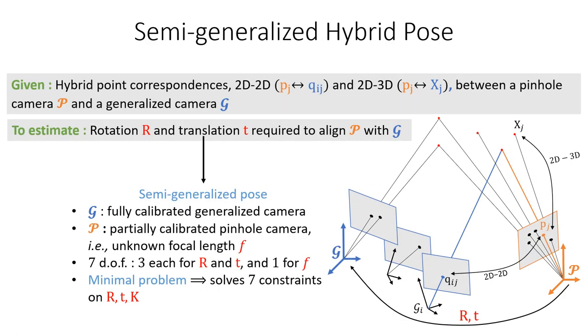Given a set of 2D-2D point correspondences and a set of 2D-3D point correspondences between a pinhole camera and a generalized camera, we aim to estimate the rotation and the translation needed to align the pinhole camera with the generalized camera. There are in all seven degrees of freedom: three each for R and T and one for F. Thus, a minimal solver requires seven constraints on R, T, and F.